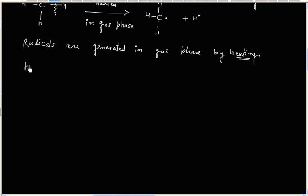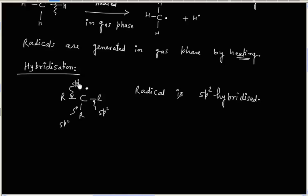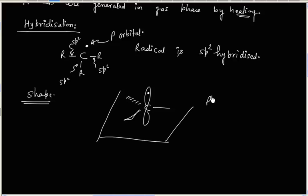Now let us discuss the hybridization of radical. From experiment, it is found that radical is sp2 hybridized. This means the three bonds are sp2 overlaps, giving three hybrid orbitals for carbon — one on each side — and the lone electron sits in the p orbital. So the shape is planar; radical has planar geometry.